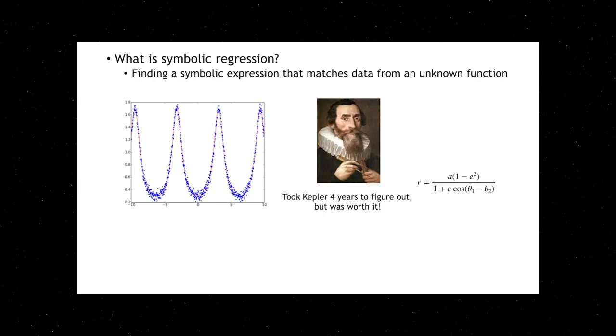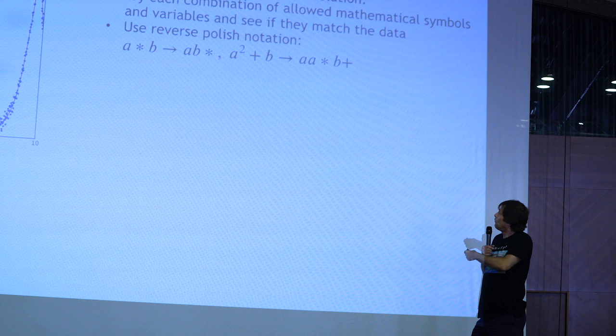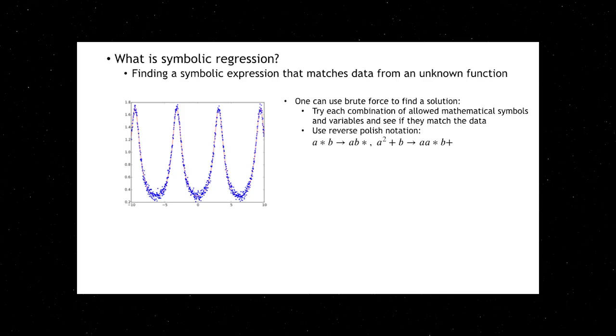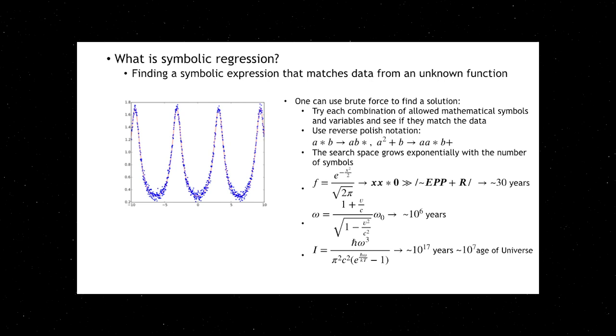It was worth those four years because it revolutionized science, but it was hard for him. You'll see that this is one of the ones that we solve automatically now in about one hour. There's an easy way of solving these automatically if you just take all possible symbolic expressions and you encode them—we use reverse Polish notation—and then you just try them all from shorter ones to longer complicated ones. But this obviously takes an exponentially long time. Just to get the Gaussian would take 30 years, get the Doppler effect formula would take a million years, and to get the Planck black body would take longer than the age of our universe. So that's kind of dumb.